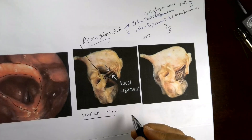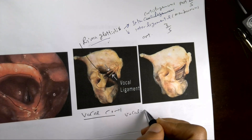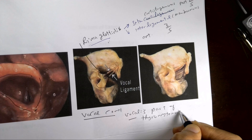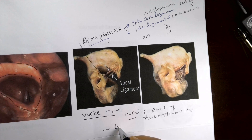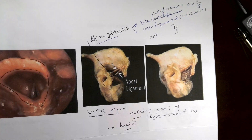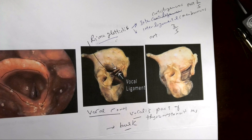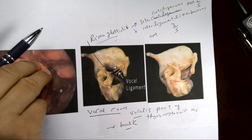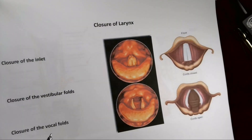The vocalis muscle is part of the thyroarytenoid muscle and represents the bulk of the vocal cord. It is important in speaking because it changes the shape of the vocal cord during the phonation process.